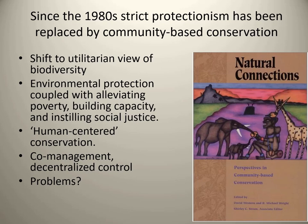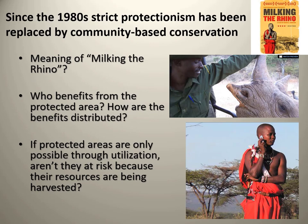Community-based conservation is one alternative that has worked out in certain cases. It's not a monolithic solution or cure-all, and as we saw in the film, community-based conservation is not without challenges and problems. From the film Milking the Rhino, I left you with three questions to think about.